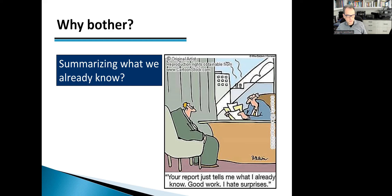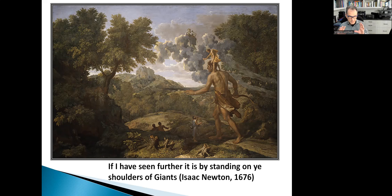Why should we bother going through all that work? The basic concept is what Isaac Newton said — we stand on the shoulders of giants. The giants are the researchers who did the primary research; we stand on their shoulders and can see a little further. Systematic reviews appraise all evidence objectively, resolve uncertainty when primary studies disagree — which is unfortunately the rule — and also identify areas where new studies are needed.